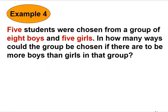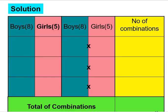Let's look at example 4. Five students were chosen from a group of 8 boys and 5 girls. We have 8 boys and 5 girls and we want to choose 5 students. In how many ways could the group be chosen if there are to be more boys than girls in that group? This is an important characteristic, we've got to choose more boys than girls. We want to choose a total number of 5 students, there must be more boys.